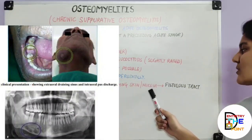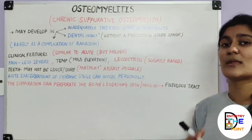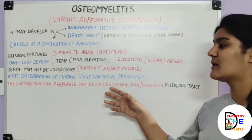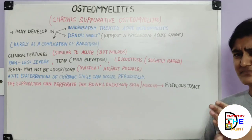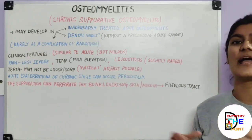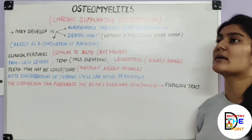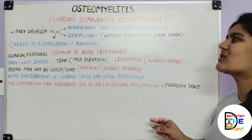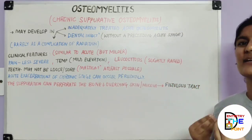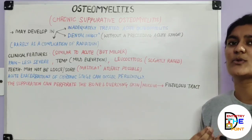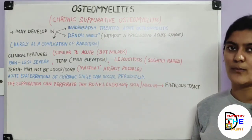The suppuration can perforate the bone and the overlying skin or mucosa through fistulous tract formation. Being a chronic form, it can persist longer and may result in sinus tracts opening to the skin. Treatment involves surgical drainage and antimicrobial therapy. Overall, it is similar to the acute form but distinguished by its milder symptoms.